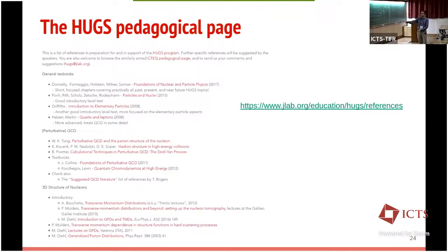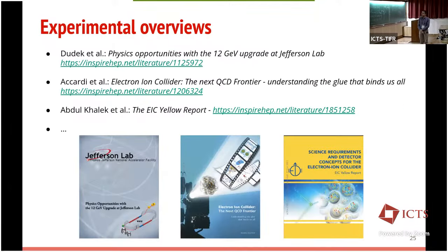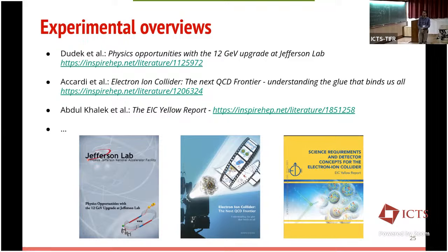A useful pedagogical resource is the HUGS school web page, a collection of references with introductory topics in hadron physics. I also suggest reading about the JLab 12 physics program and the next frontier in QCD — the Electron Ion Collider. The EIC Yellow Report is the most recent and contains extensive phenomenology and impact studies worked out in the TMD field, showing how the EIC will improve our knowledge of hadron structure and hadronization.